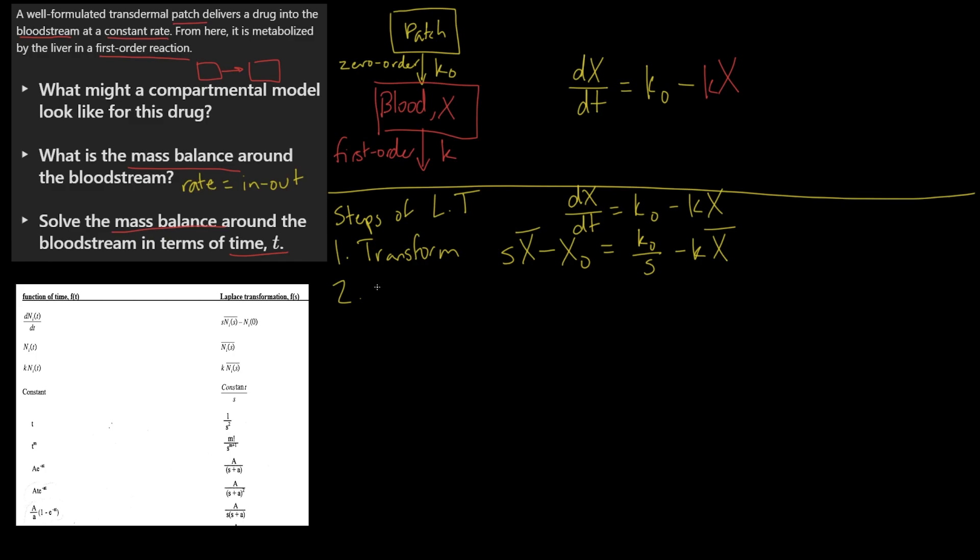Step two, we want to rearrange using algebra, which is the whole point of using the Laplace transform instead of doing calculus. So now we have X̄ on both sides, and our end goal is that we want X̄ on one side and everything else on the other side. So we can add kX̄ over to one side, we get sX̄ plus kX̄. We can move X₀ over to the other side: k₀/s plus X₀.